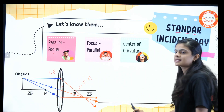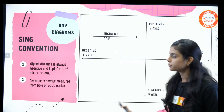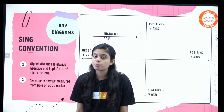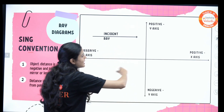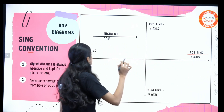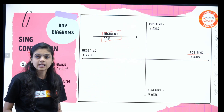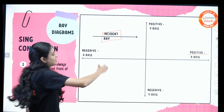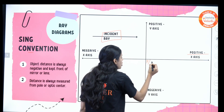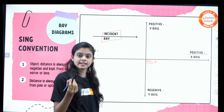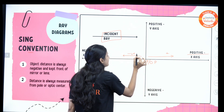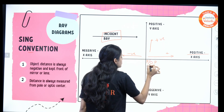For sign convention, consider your mathematical graph. Fix the incident ray along the positive x-axis. We always measure distances from the pole, or optic center in the case of a lens. In the direction of the incident ray is positive; opposite is negative. Upward is positive and downward is negative.